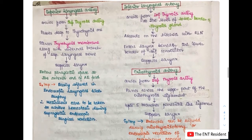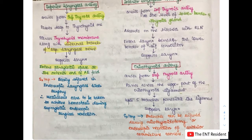The superior laryngeal artery arises from the superior thyroid artery, then passes deep to the thyrohyoid muscle, pierces the thyrohyoid membrane along with the lymphatic vessels draining the supraglottic larynx and the internal branch of the superior laryngeal nerve, and then supplies the larynx. It enters the paraglottic space at the anterior end of the AE fold. Surgically, this artery is very easily injured in endoscopic laryngeal laser surgery, so meticulous care is needed to achieve hemostasis during supraglottic endoscopic surgical resection.